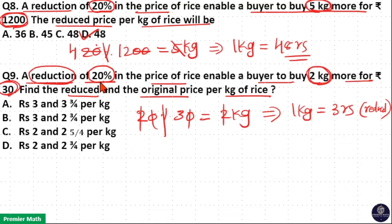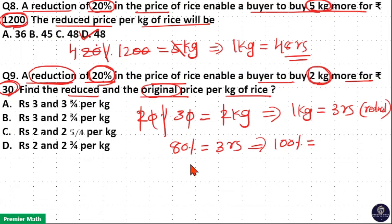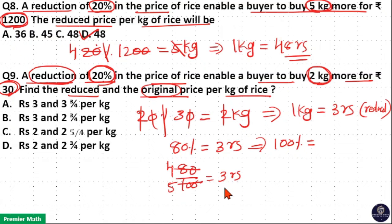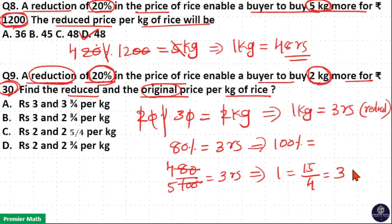How much reduced? 20% reduced. That means 80% of the price is equal to Rs. 3. But we need to find out the original price as well. Original price is 100%. So 100% is equal to... 80% is Rs. 3, means 80/100 is Rs. 3. Now, 20 goes 4 times in 80, and 20 goes 5 times in 100. So 4/5 equals Rs. 3, meaning 1 unit equals 3 × 5 = 15 divided by 4, which is 3 remainder 3, so 3 and 3/4, that is Rs. 3.75.